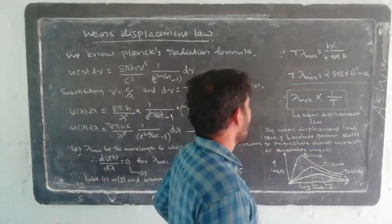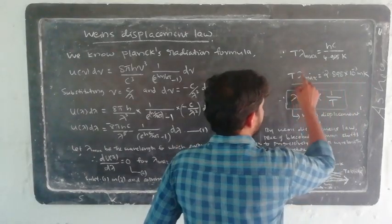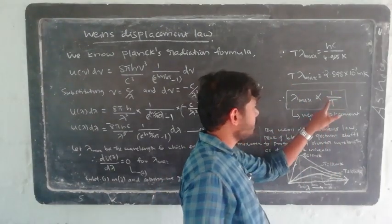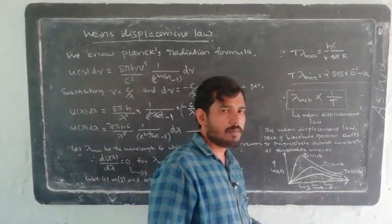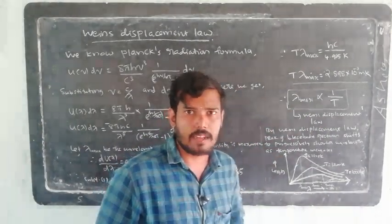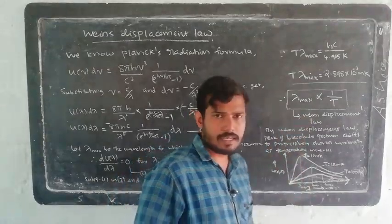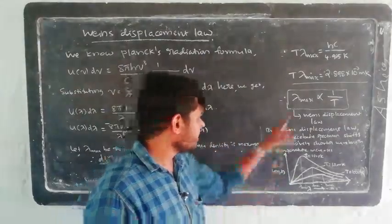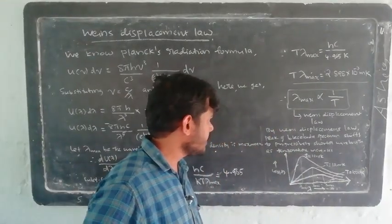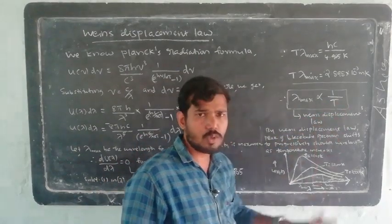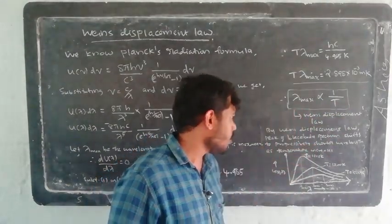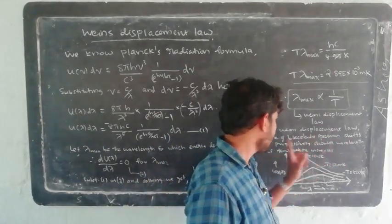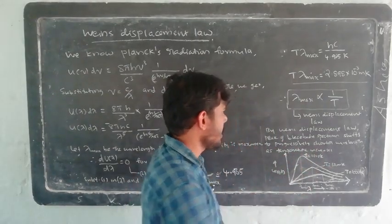This means T·λ_max is constant, and λ_max is proportional to 1/T — that is, λ_max is inversely proportional to temperature. This is Wien's displacement law: the wavelength corresponding to maximum energy density is inversely proportional to temperature. The peak of the black body spectrum shifts to progressively shorter wavelengths as temperature increases.